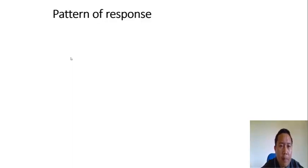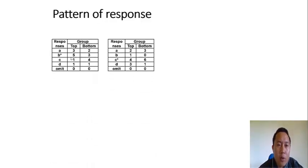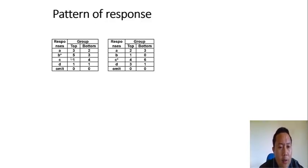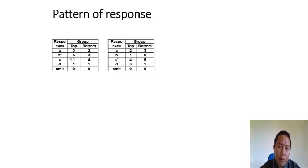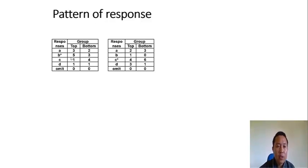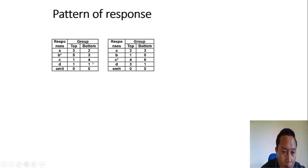Next is the pattern of response — this is very important. Under this topic, we will discuss patterns of response. In a multiple choice item, we have distractors and a key. The main role of a distractor is to distract students from choosing the correct answer. If you look at Table 1, all distractors are functional — no problem there.